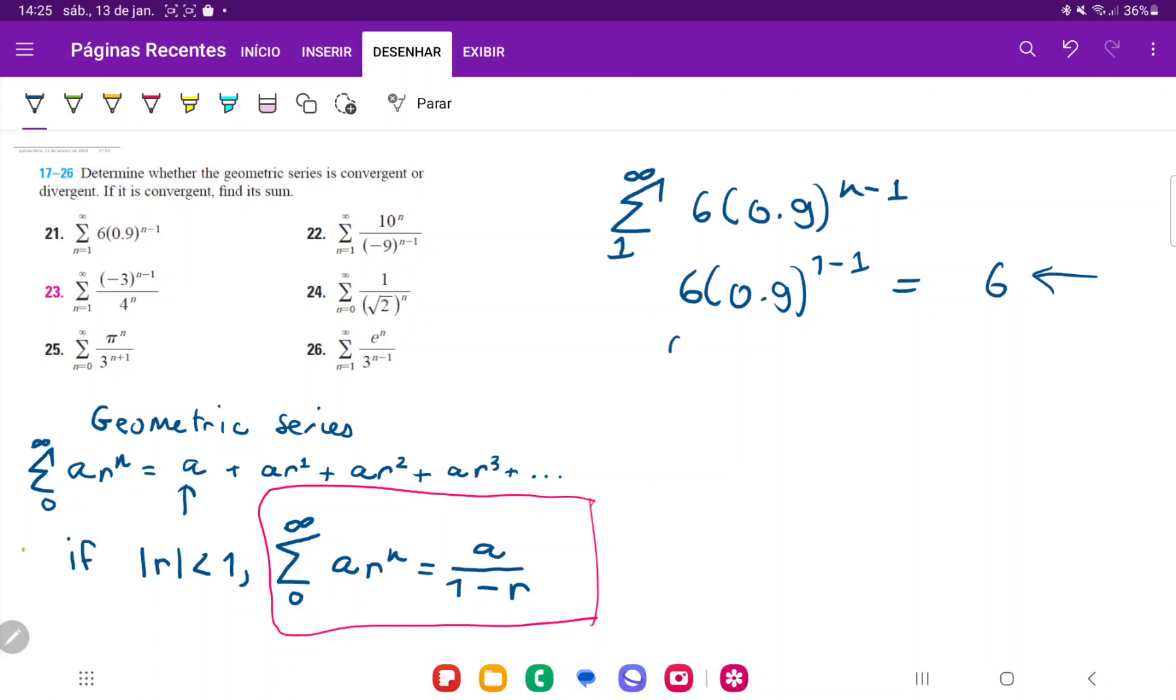What about our second term? If we do 6 times 0.9 to the power of 1, this is just going to be 6 times 0.9 to the power of 1. So we can see that the second term here is a times r to the power of 1. So this does follow the rule.